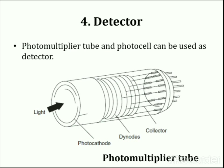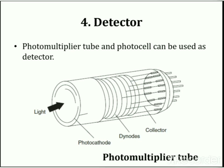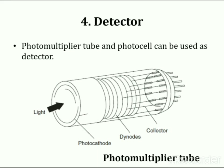The next part of the instrument is the detector. Photomultiplier tubes and photocells can be used as detectors in both nephelometry and turbidometry. In a photomultiplier tube, multiplication of the initial photoelectrons by secondary emission is employed to obtain greater sensitivity to very weak light intensities. Several anodes at a gradually increasing potential are contained in one bulb. For detailed construction and working, refer to the previous lecture on instrumentation of ultraviolet-visible spectrophotometry.